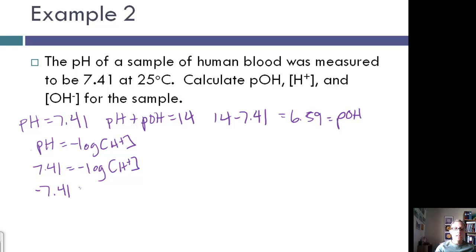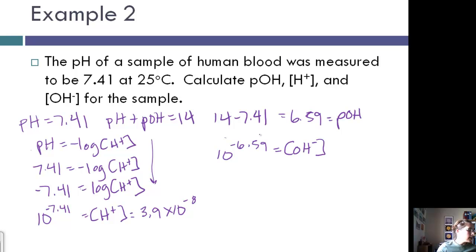The inverse log is 10 to the power. So 10 to the negative 7.41 is equal to the concentration of H plus, and 10 to the negative 7.41 is 3.9 times 10 to the negative 8. I can do the same thing with the pOH. If I follow these same steps, I can say that 10 to the negative 6.59 is equal to the concentration of OH minus, and 10 to the negative 6.59 is 2.6 times 10 to the negative 7. So inverse of log is 10 to that power.